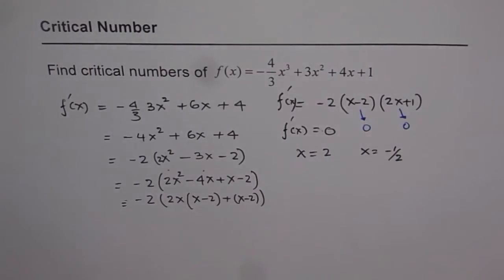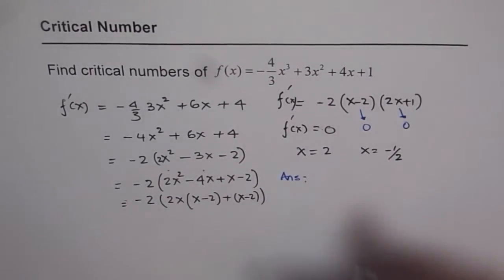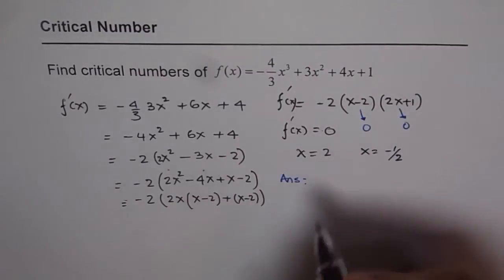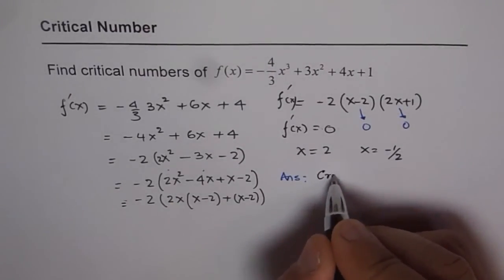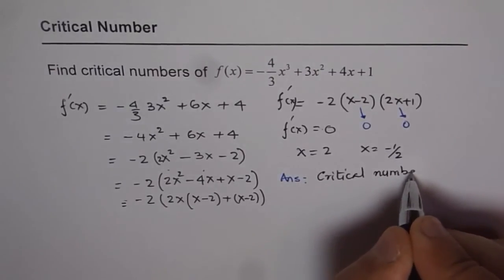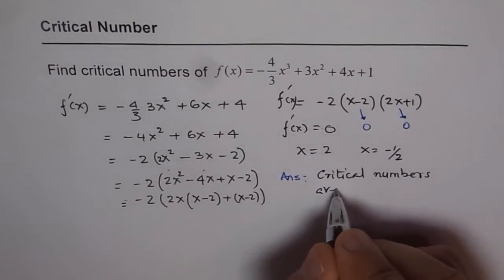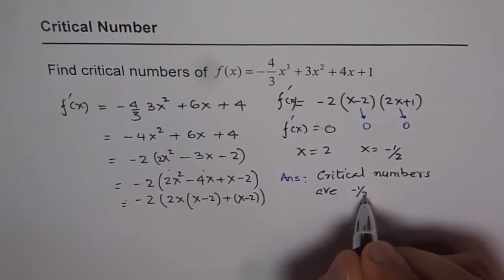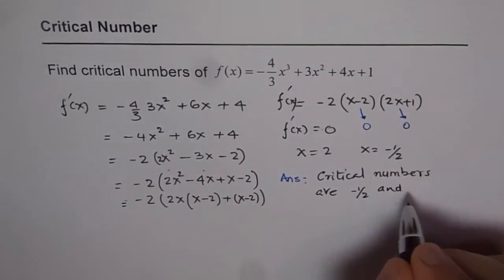Therefore, we can write down our answer. The critical points or critical numbers are -1/2 and 2.